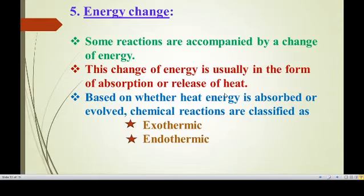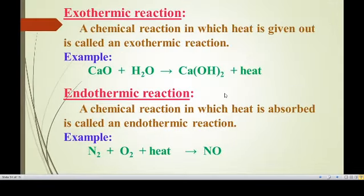The next characteristic is energy change. Some reactions are accompanied by a change in energy, especially in the form of absorption or release of heat. Based on this, chemical reactions are classified into two types: exothermic and endothermic. An exothermic reaction is one in which heat is given out. For example, calcium oxide mixed with water produces calcium hydroxide and the test tube feels hot — heat is liberated. To indicate evolution of heat, we write plus heat on the product side of the equation.